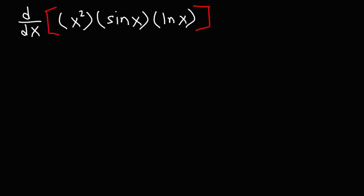Now, you need to be familiar with something called the product rule. The derivative of f times g is equal to f prime times g plus f times g prime. So that's if we have two things multiplied to each other.